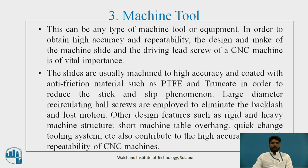The machine tool can be any type of machine tool or equipment. In order to obtain high accuracy and repeatability, the design and making of the machine slide and the driving lead screw of a CNC machine is of vital importance. The slides are usually machined to high accuracy and coated with anti-friction material such as PTFE to reduce the stick and slip phenomenon. Large diameter recirculating ball screws are employed to eliminate backlash and lost motion. Other design features such as rigid and heavy machine structures, short machining table overhang, and quick change tooling systems also contribute to high accuracy and repeatability.